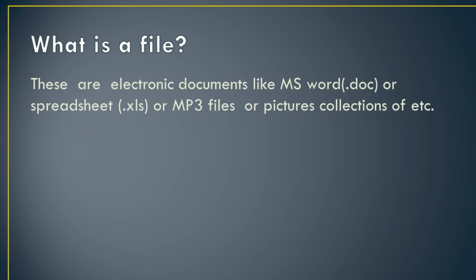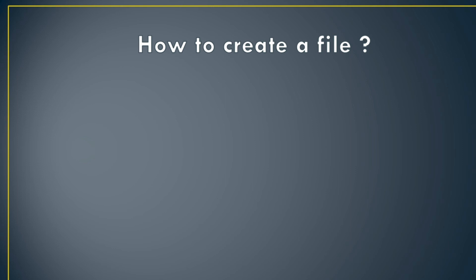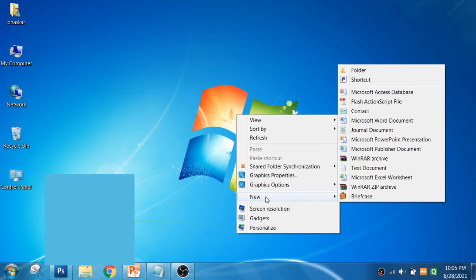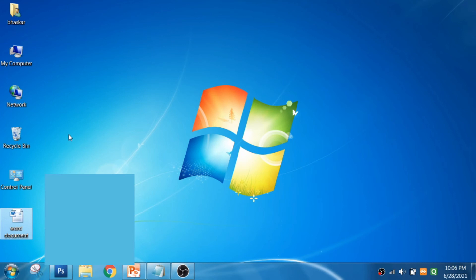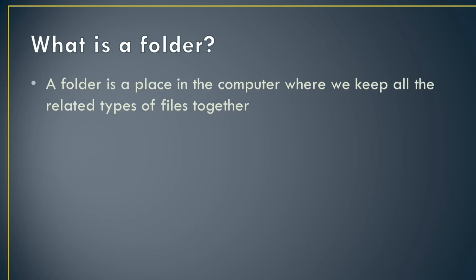Files are electronic documents like MS Word spreadsheets, MP3 files, pictures, etc. To create a new file, right-click on the desktop, click on the New option, then click on Microsoft Word Document. Delete the old name, type a new name, and press Enter. The new file is created.